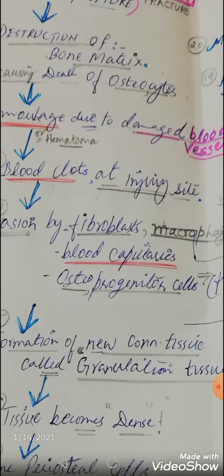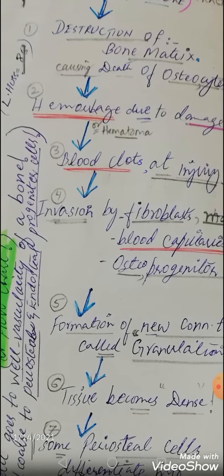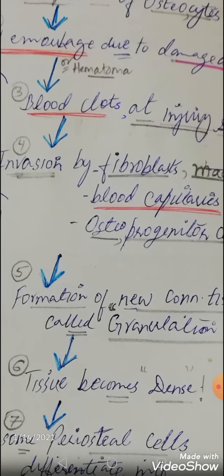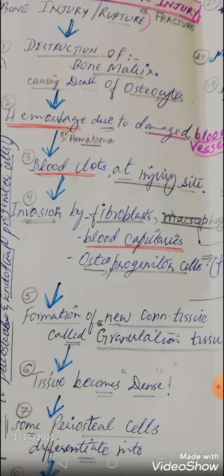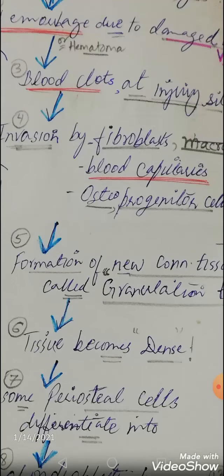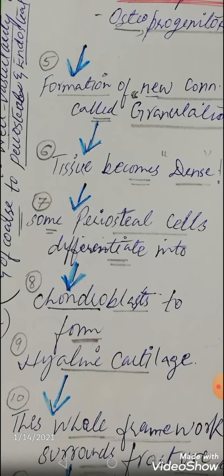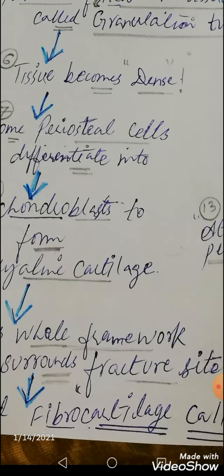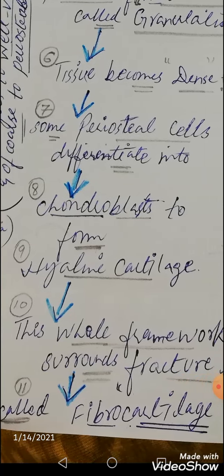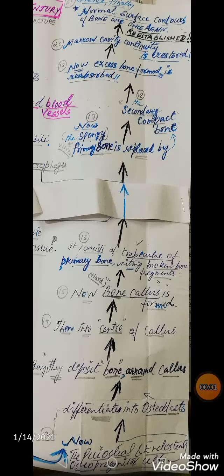These cells are present in the near vicinity of connective tissue — such as the periosteum — which helps provide all these tissues at the fracture site. New connective tissue, called granulation tissue, forms. That tissue becomes denser, and some periosteal cells differentiate into chondroblasts to form hyaline cartilage. This framework surrounds the fracture site, forming a fibrocartilaginous callus.